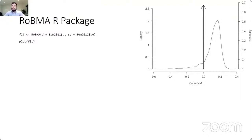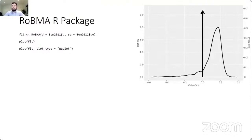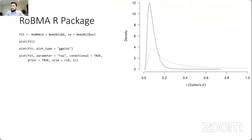The package also provides plotting functions. You can plot the model-averaged mean estimate, where spikes correspond to the probability of models assuming absence of the effect (effect size = 0), and the slab corresponds to the density of models assuming presence of the effect. These functions are also implemented in ggplot, so if you are a ggplot fan you can use those. You can also look at the prior and posterior distribution — for example, for the tau estimate assuming presence of the effect — and many other combinations.